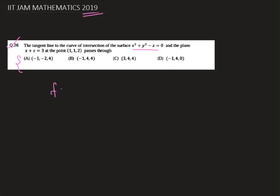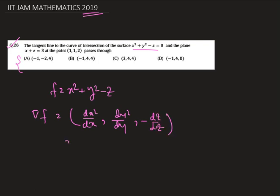Let f equals x square plus y square minus z. Therefore del f is equals to dx square dx, dy square dy, and d minus z dz. Therefore it is 2x, 2y, minus 1.